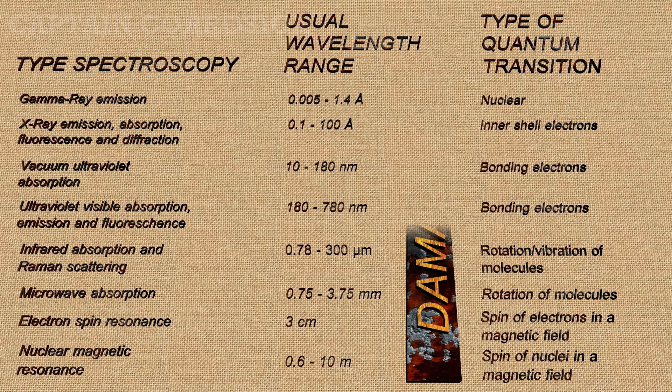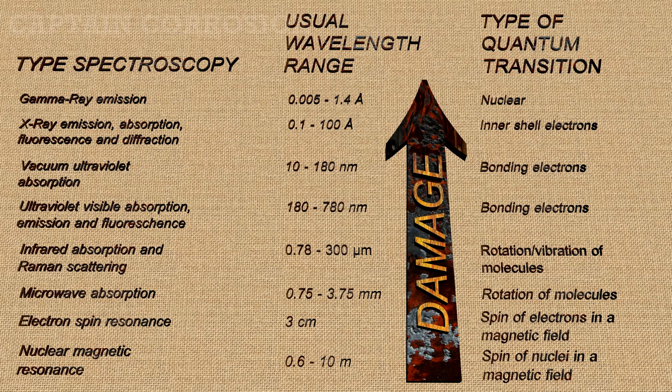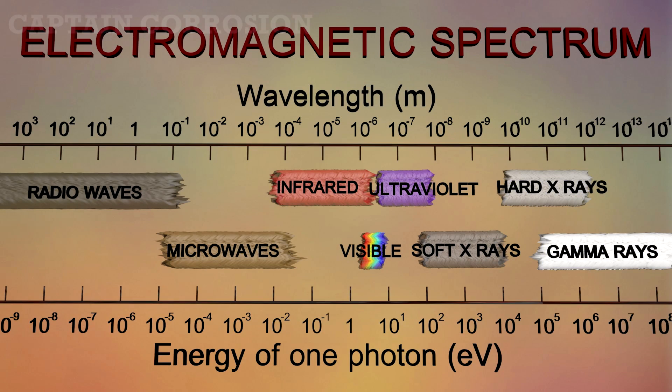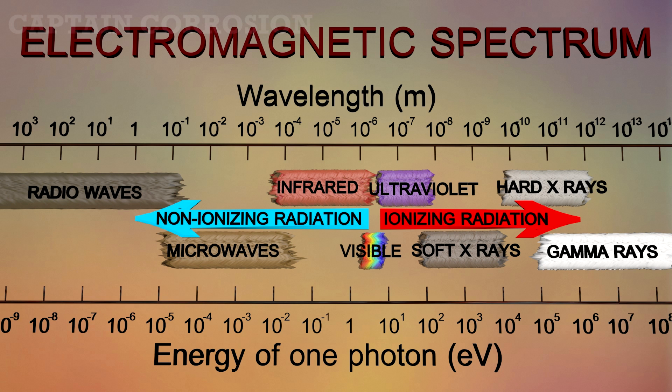Although most of these methods are considered non-destructive, the general rule is that higher energy radiation, which has a shorter wavelength, causes more damage to materials. Therefore, based on the energy, we can divide the electromagnetic radiation into two groups, ionizing and non-ionizing radiation.